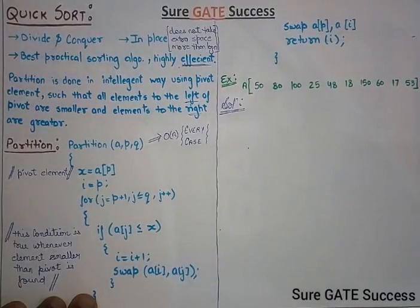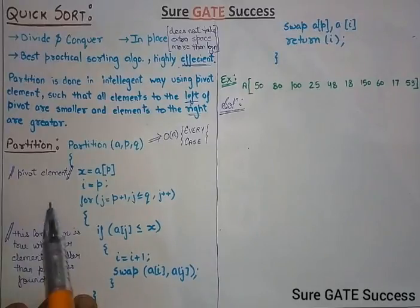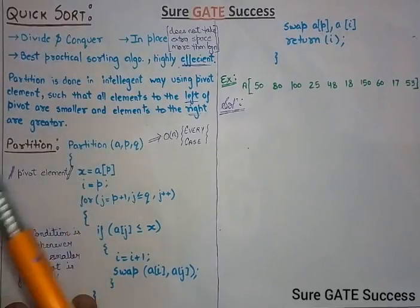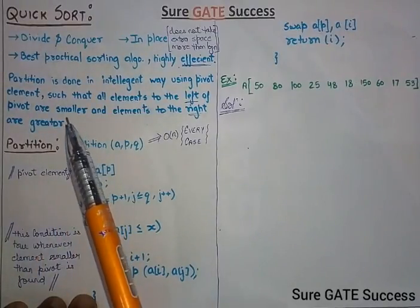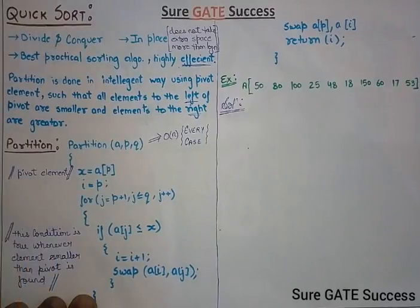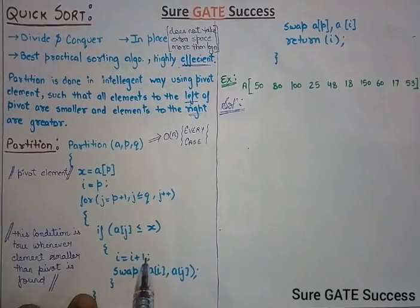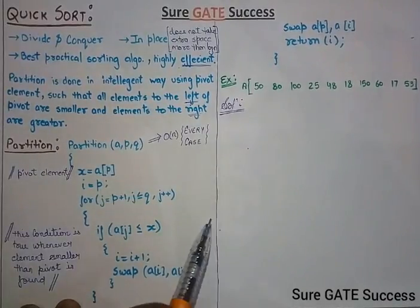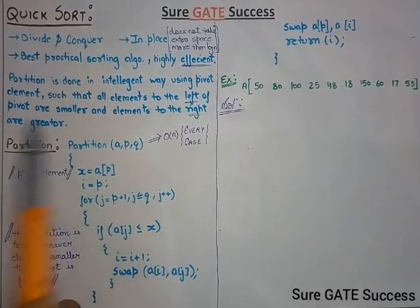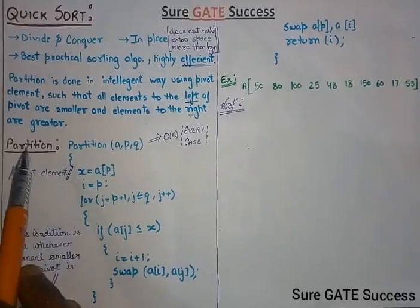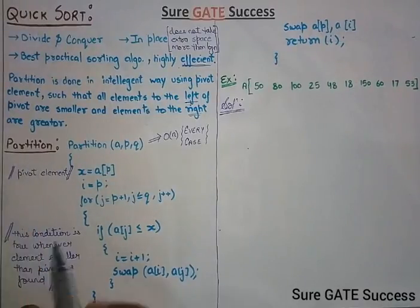In merge sort, we have to merge at the end. But in quicksort there is no need to merge the result in the end because we are partitioning in an intelligent way. This algorithm takes constant time better than merge sort as there is no combining step. So let's understand the partition algorithm first, as it will be used in the quicksort algorithm.